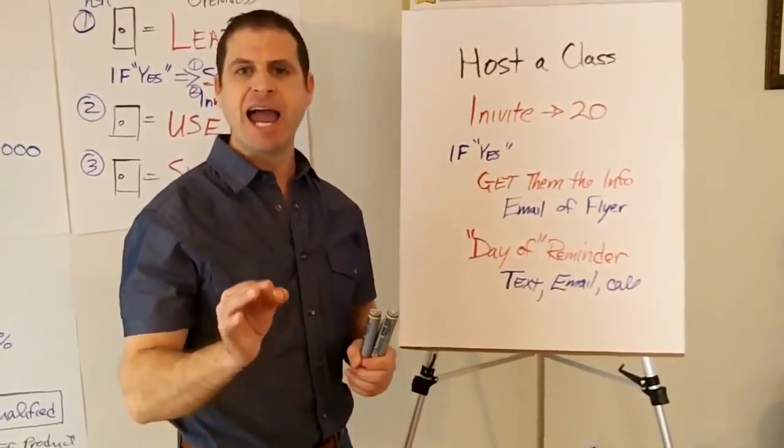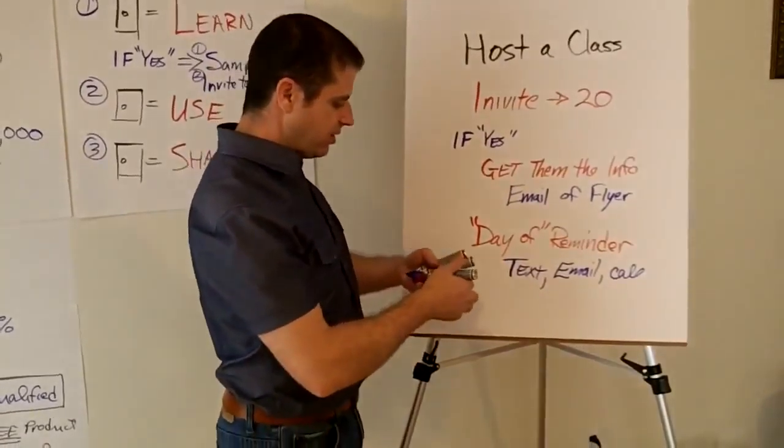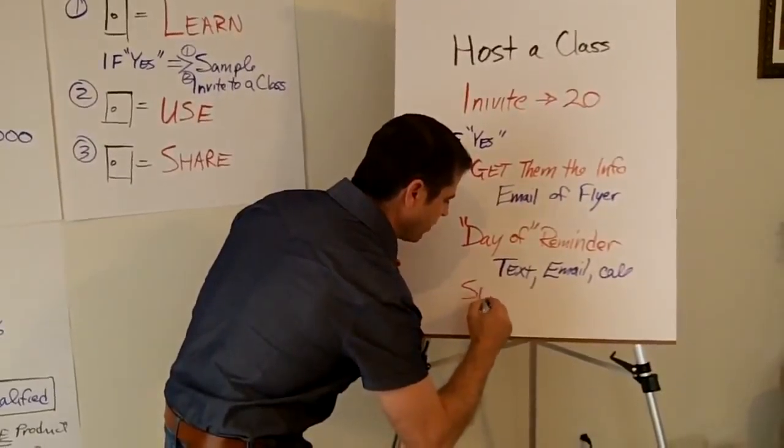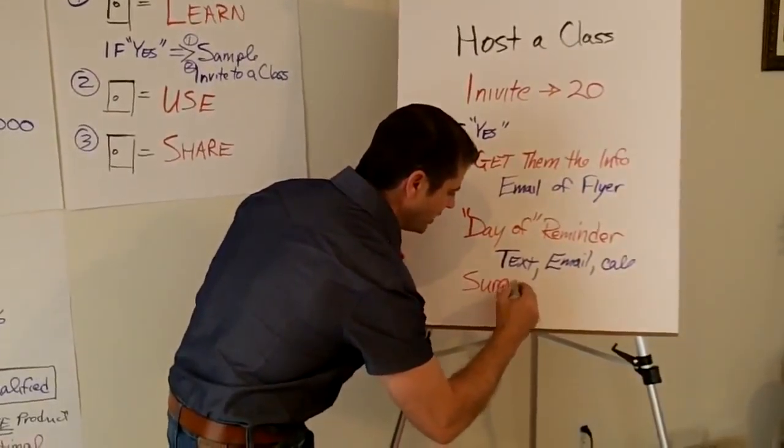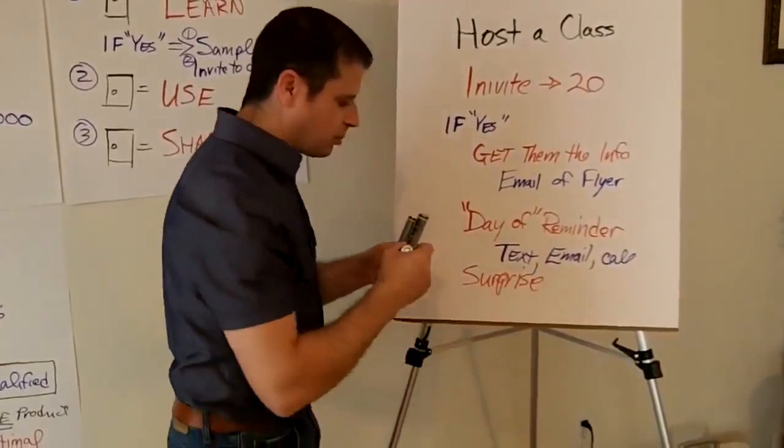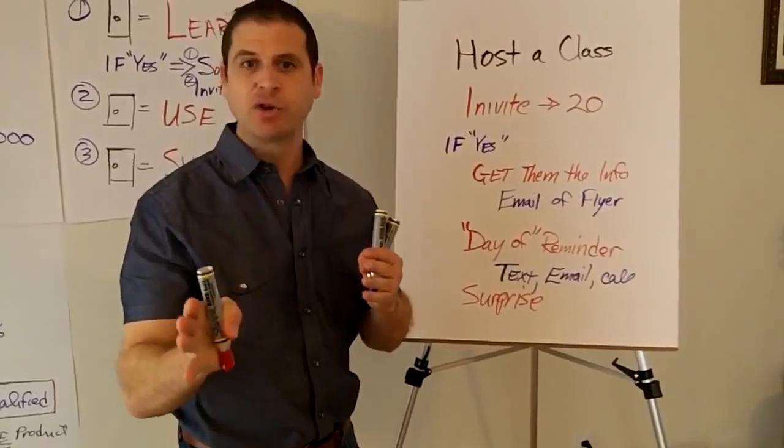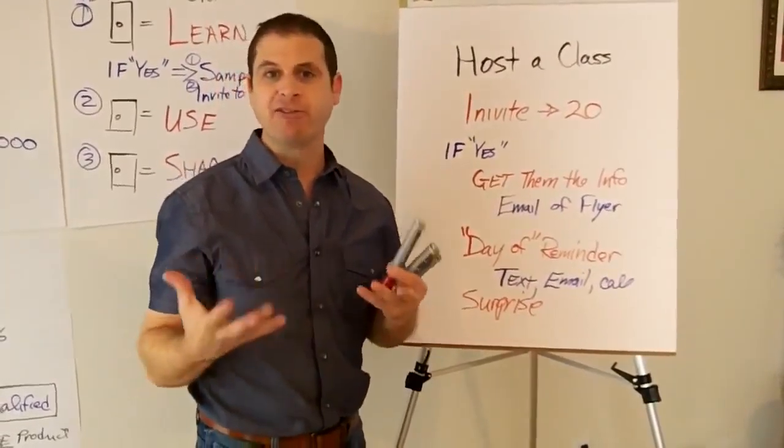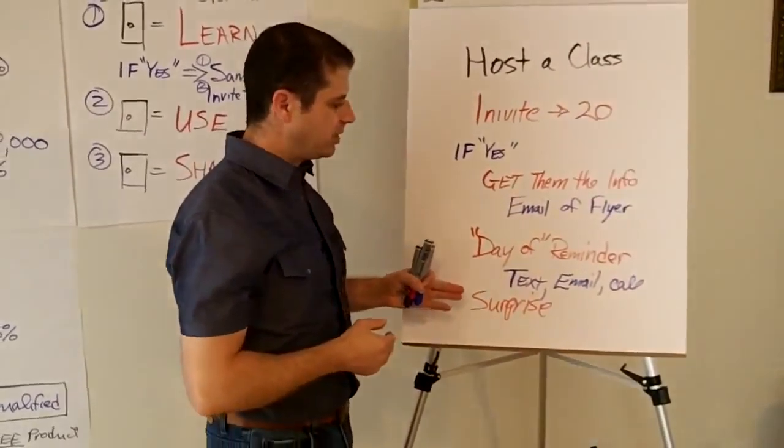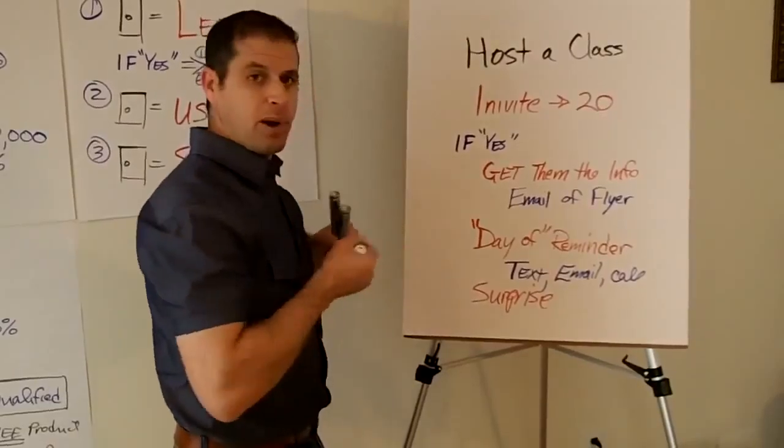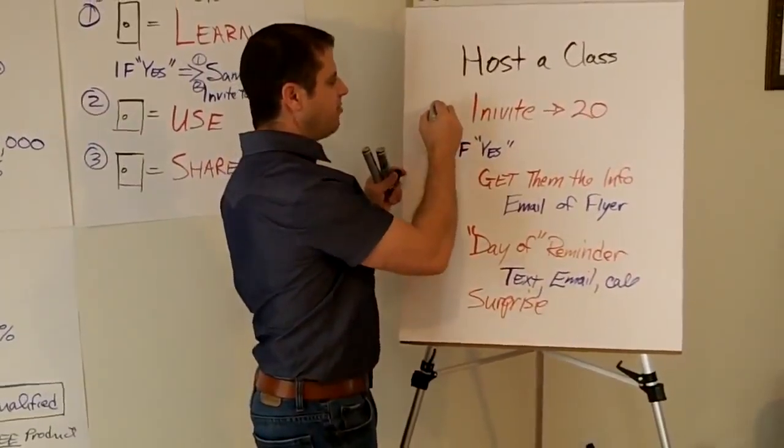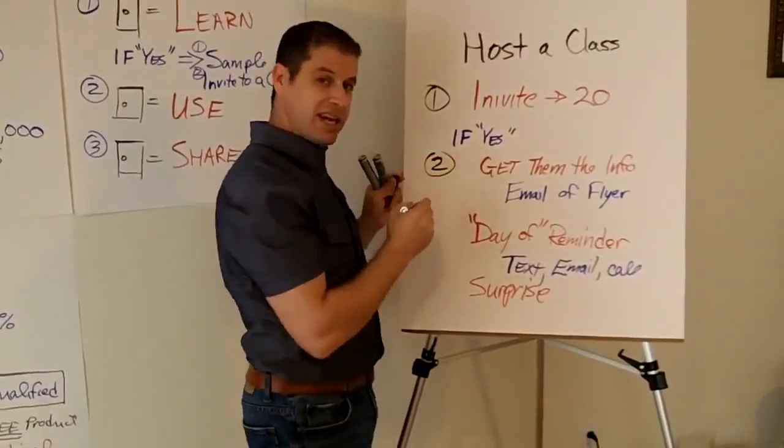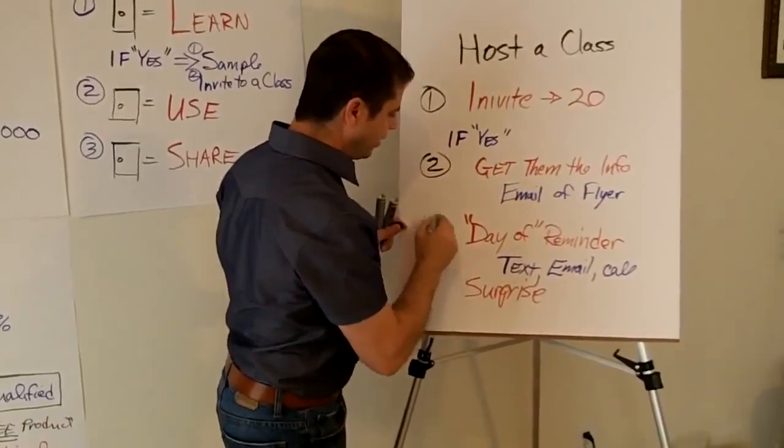But in either regard, what you're going to do is you're going to make that day of contact and you're going to simply say, look forward to seeing you at tonight's class. And when you arrive, I have a surprise for you. And so this is a really fun, just let them know that you have a surprise. Now that surprise can be an entry into a raffle for a drawing, or you might give out free little oil samples, or you might have goodies and treats. There's a number of things that you can do.